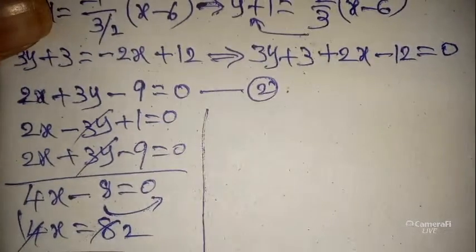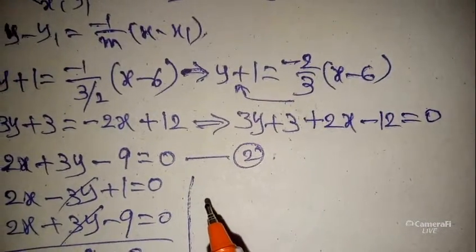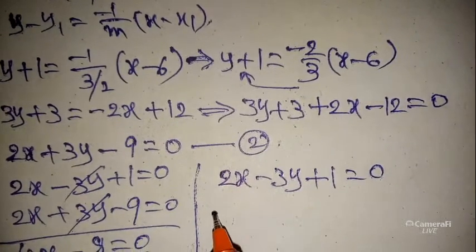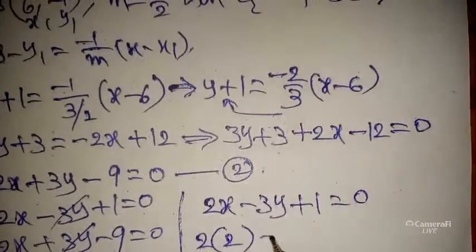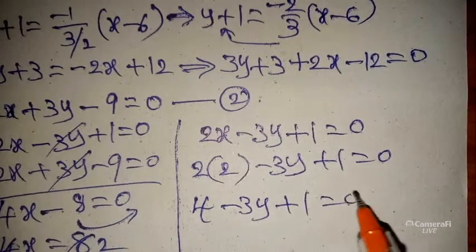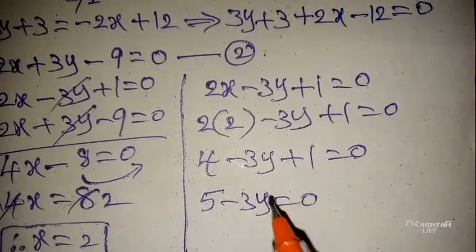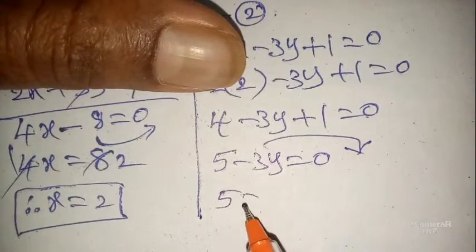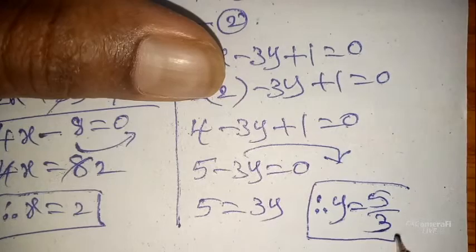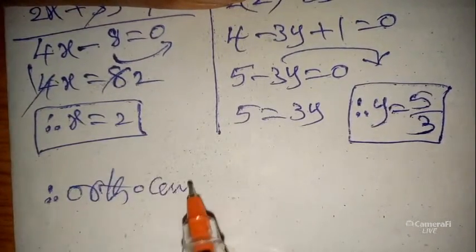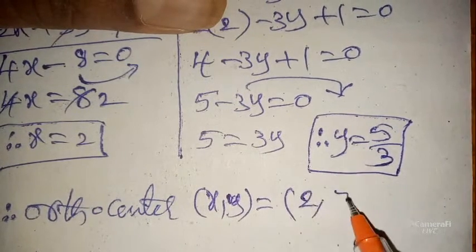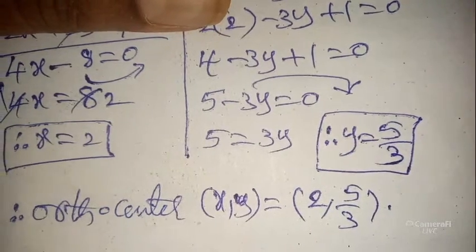Substituting x = 2 into Equation 1: 2(2) − 3y + 1 = 0, giving 4 + 1 − 3y = 0, so 5 − 3y = 0, thus 3y = 5, therefore y = 5/3. The orthocenter is (x, y) = (2, 5/3), which is our required answer.